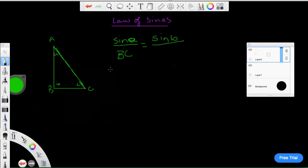Sine of B over CA, and sine C over length AB. So that's all it is.